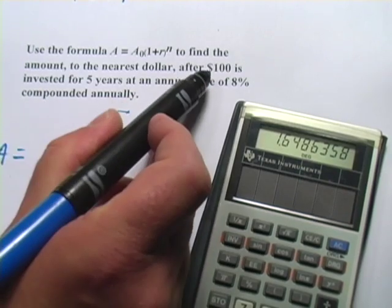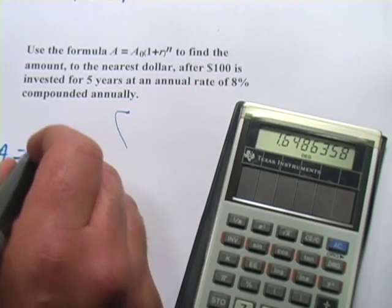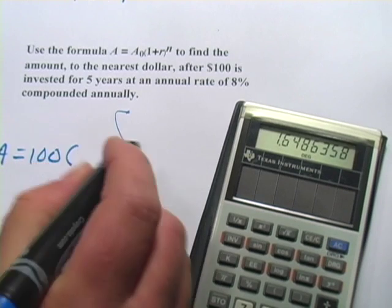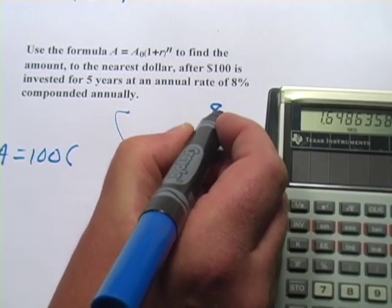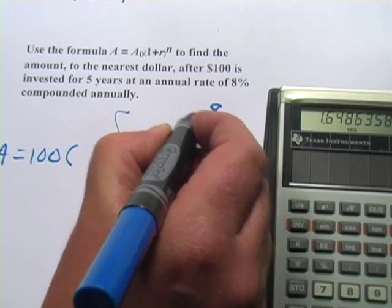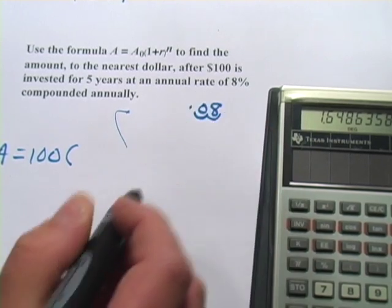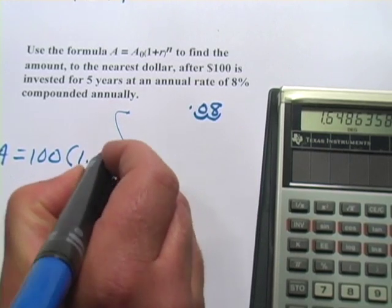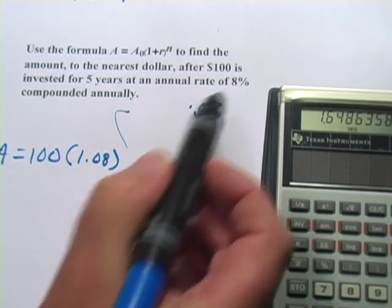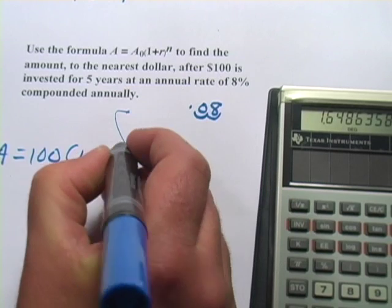A equals, our A sub 0 is $100. And then we have 1 plus R. R is 8%, but we've got to convert that 8% to a decimal. So we take and move the decimal point two places to the left. So 1 plus 0.08 would be 1.08 and to the N power would be to the fifth power.